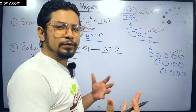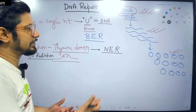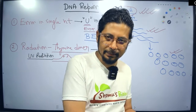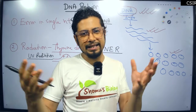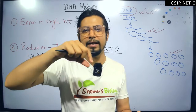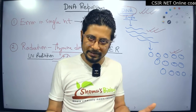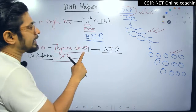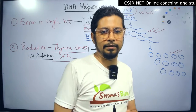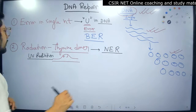Most students have confusion between Base Excision Repair and Nucleotide Excision Repair. In Base Excision Repair, we are dealing with a single base problem — like a uracil in DNA — so we cut it out, fill the gap with a new nucleotide, seal the nick, and the job is done. In Nucleotide Excision Repair, the thymine dimer and a bigger chunk of the DNA is cut out, the gap is refilled, and the nick is sealed.